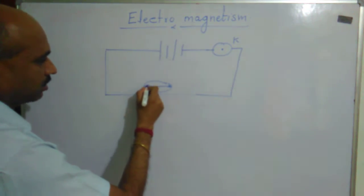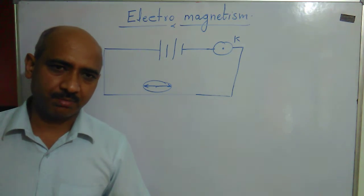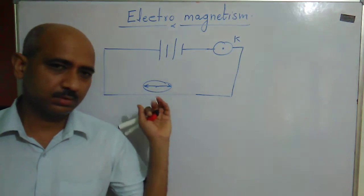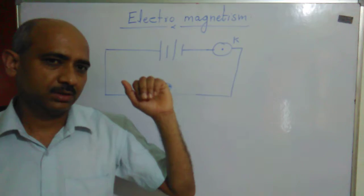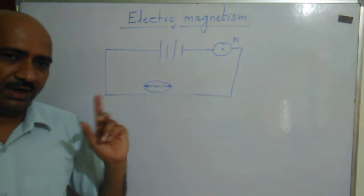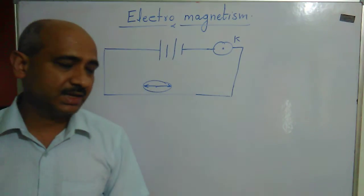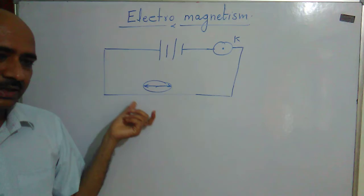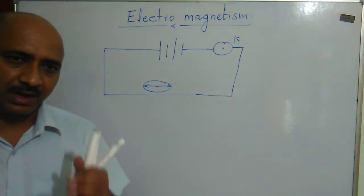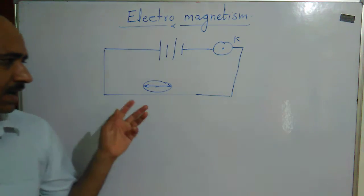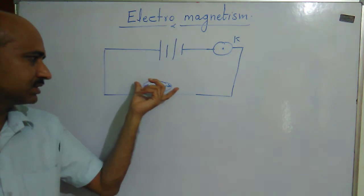He placed a magnetic needle near the circuit. A magnetic needle is a simple bar magnet that shows geographical north and south. He noticed that when the key is off, the needle shows no deflection. But when the current is on, there is a deflection in the magnetic needle, proving the existence of a magnetic field.